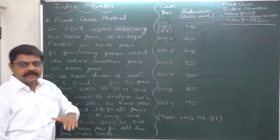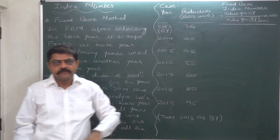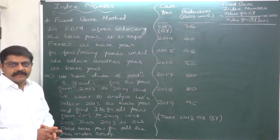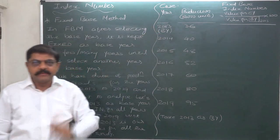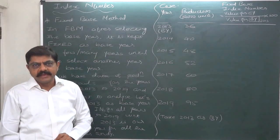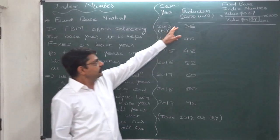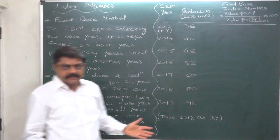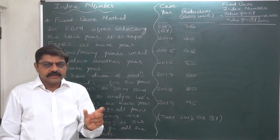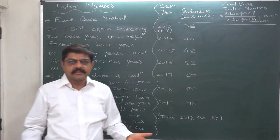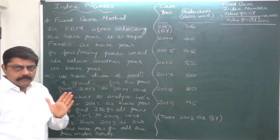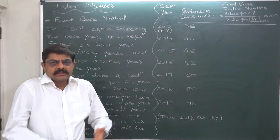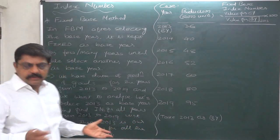Normally, when a time series is with us and if the first year itself has stability — that means without any fluctuations in the values of the variable — then it is advisable to select it as the base year. In an examination, if there is no specific information about which year to take as the base year, I advise students to take the first year of the data as the base year when using the fixed base method. If chain base method is specifically stated, there is no need to specify the base year, but that we shall discuss in future lectures.